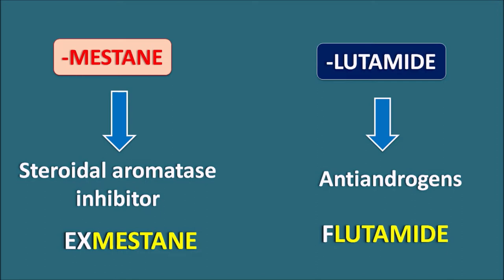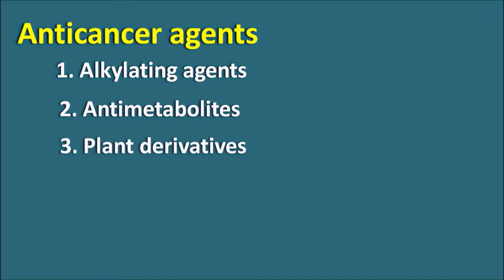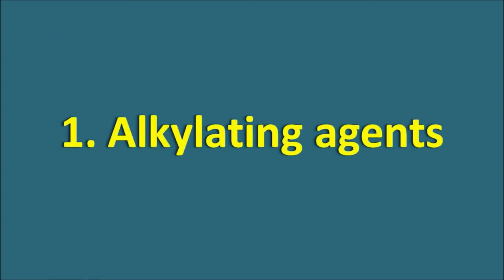In this way, we can use many types of suffixes and infixes to remember anti-cancer drugs easily. Anti-cancer agents are classified into: (1) alkylating agents, (2) anti-metabolites, (3) plant derivatives, (4) hormone analogs, (5) antibiotics, and (6) a miscellaneous category with drugs acting by different mechanisms. Let us go through these one by one, starting with the alkylating agents.